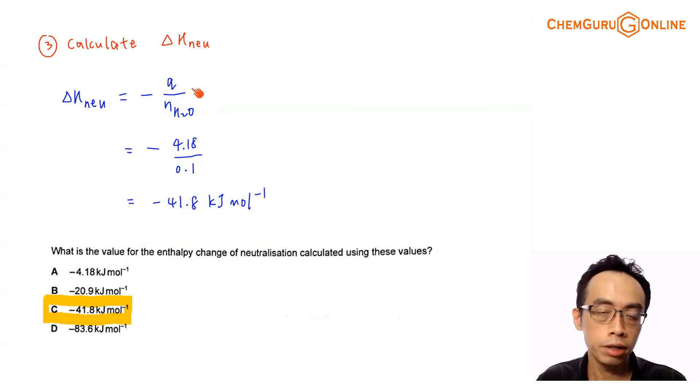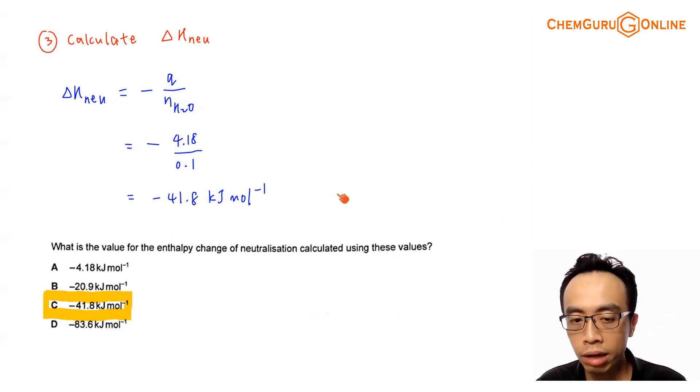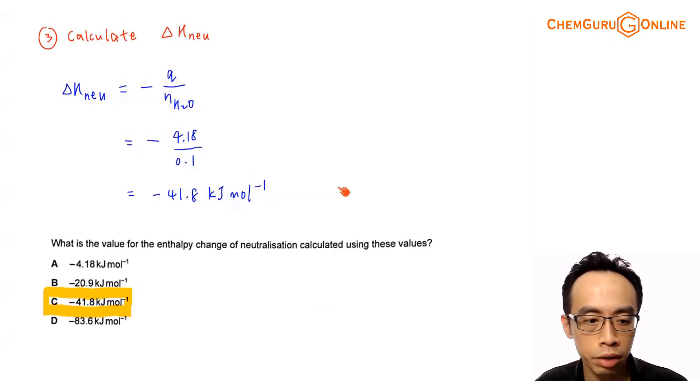Q term, which is the quantity of heat that is released by neutralization, divided by the number of mole of water. So we have calculated all these terms previously. The quantity of heat is 4.18 kJ. Number of mole of water is 0.1. So the enthalpy change of neutralization will be negative 41.8 kJ per mole. So we have already calculated this value and therefore we can run through our options.